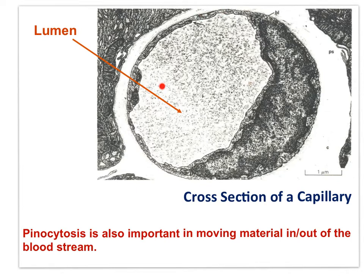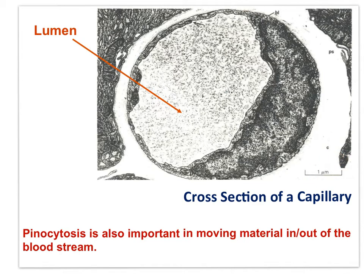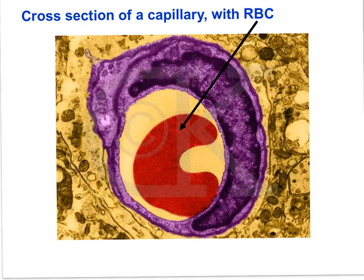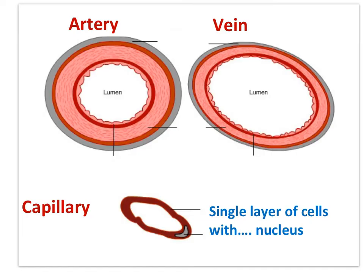Pinocytosis serves to move materials out of the blood into the interstitial fluid surrounding the capillary. If you look closely, you can see pinocytotic vesicles in the capillary wall cell. You can see that the lumen of the capillary is approximately 5 micrometers in diameter. Here is a capillary that has ruptured with red blood cells leaking out, and a color-enhanced image of a capillary with a red blood cell within the lumen. Here is a review of the cross-sectional appearance of arteries, veins, and capillaries. This image of the capillary should help you see the one-cell nature of the capillary wall, with the thickened regions representing the nucleus of the cells that make up the wall.